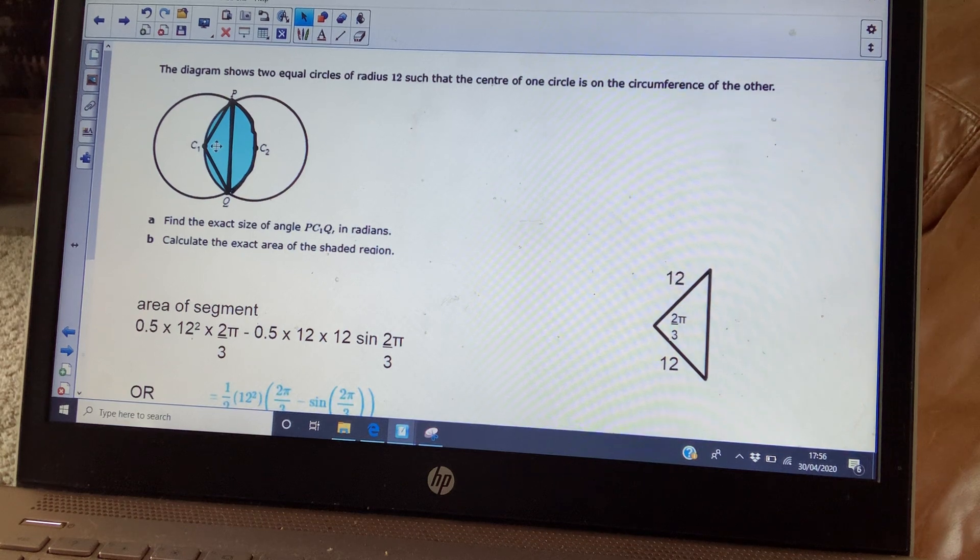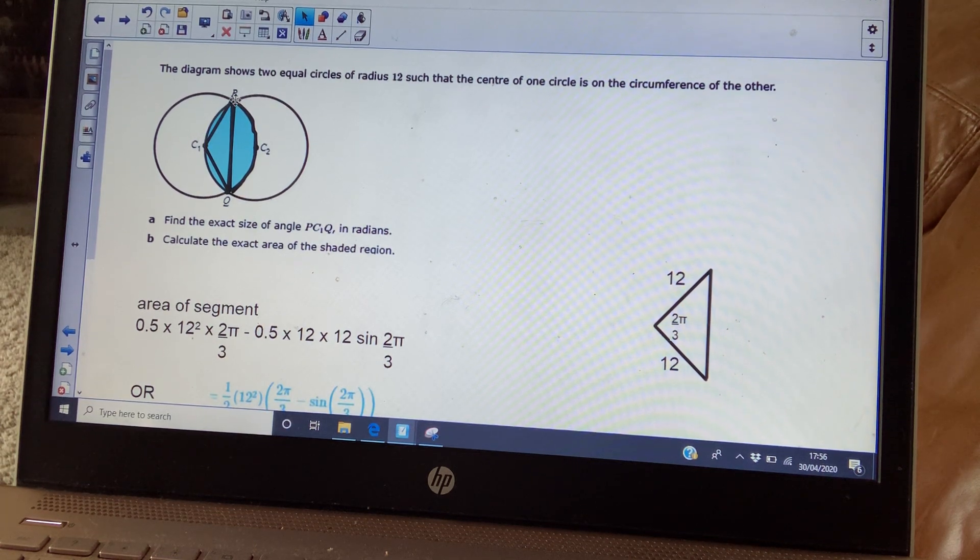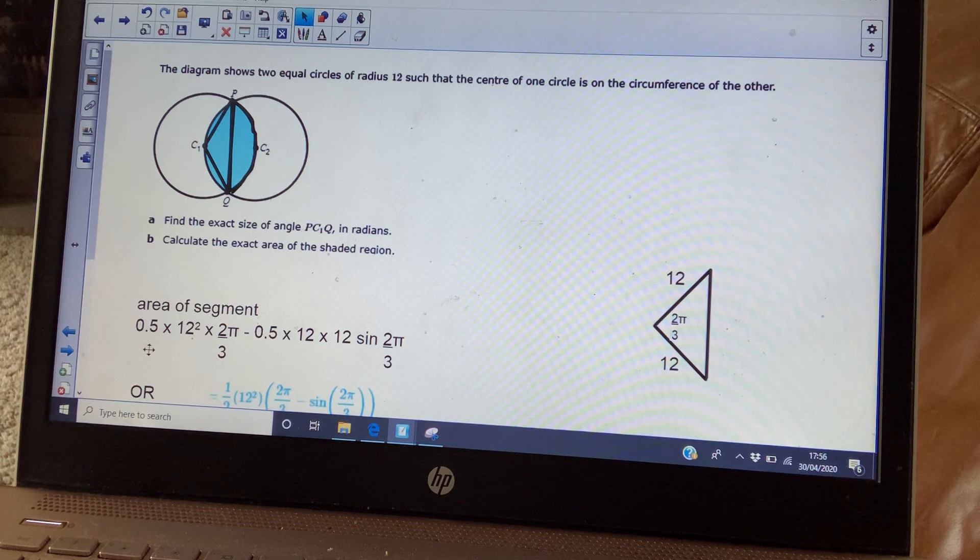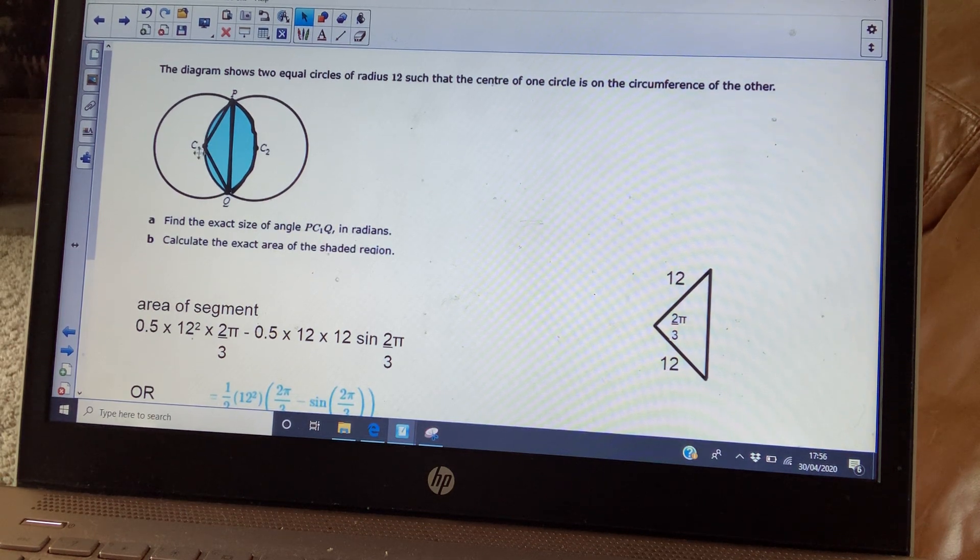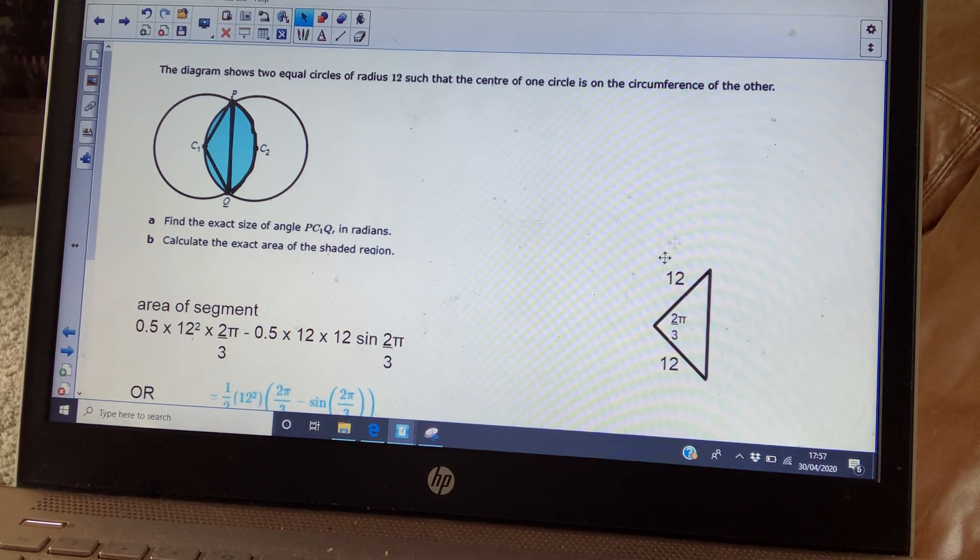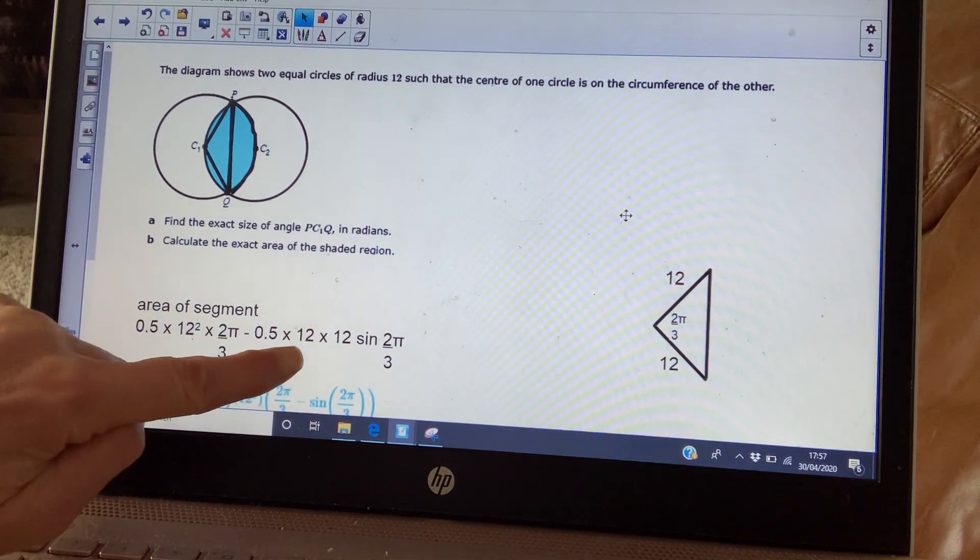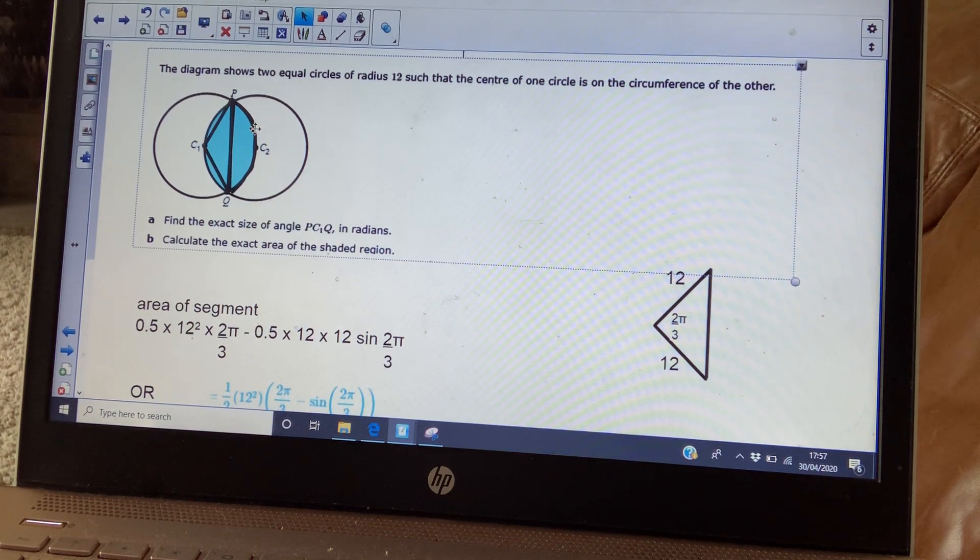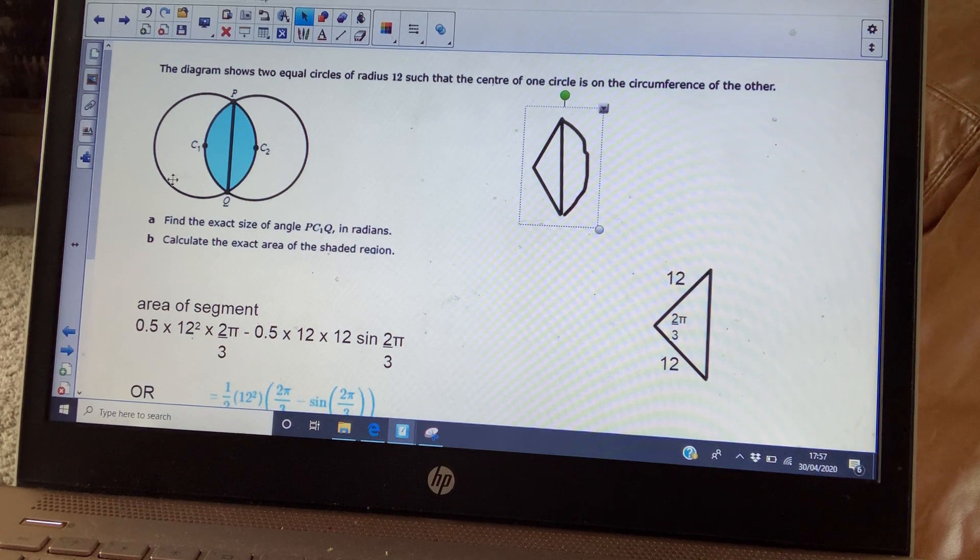So to find the area, remembering that this angle here is two thirds pi. We know the area of a sector is a half times the radius squared, which is 12, times the angle. So the area of that sector is going to be a half times 12 squared times two thirds pi. I'm then going to remove from it the area of this triangle. Now, I've drawn this triangle out here so you can see it. And of course, you're going to be using a half A times B times the sine of angle C for that. So a half times 12 times 12 times the sine of two thirds pi. So this calculation should give me that segment's area.